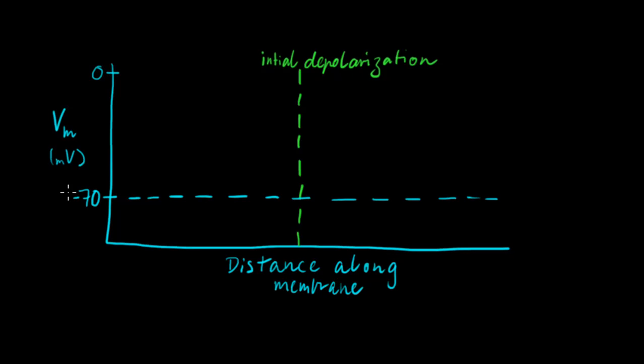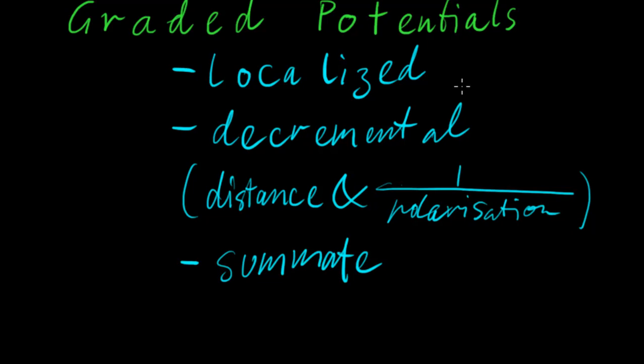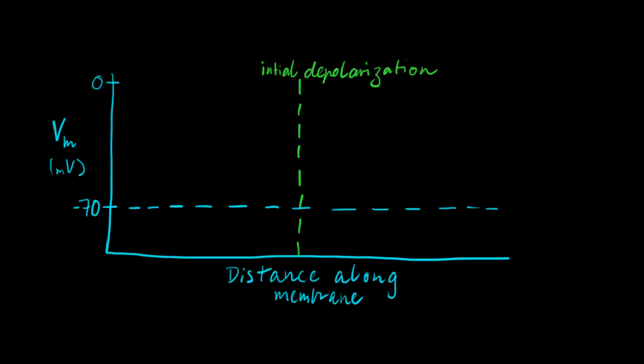So here, here's just a little graph which illustrates the fact that it's localised, that it can be decremental, and also I might even show that it can summate. So here, let's say we had an initial point of depolarisation along the membrane, and then we get farther along the membrane as we go left and right. And this axis here is just the membrane potential. So we've stimulated, we've depolarised the membrane, and from this point it will get gradually less and less. We could do a point here, and it would be quicker to go down.